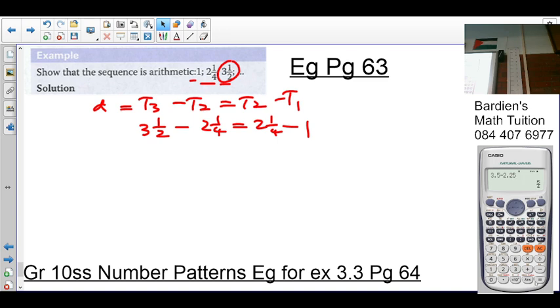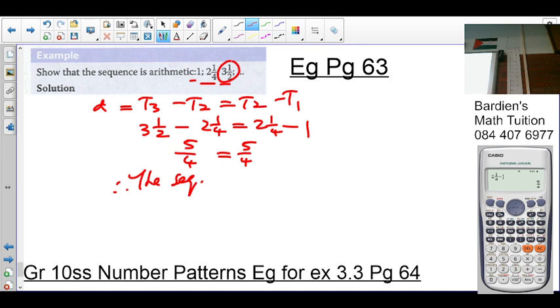Is that equal to 2 and a quarter? We press shift and the fraction button to get the mixed fraction: 2 and a quarter minus 1 is 5 over 4. What do you notice? The same. Therefore, the sequence is arithmetic.